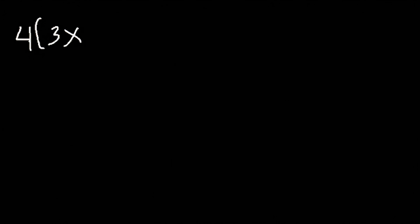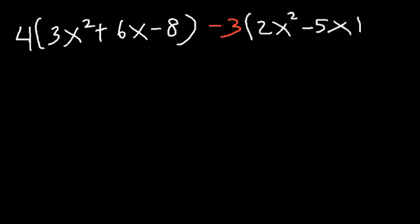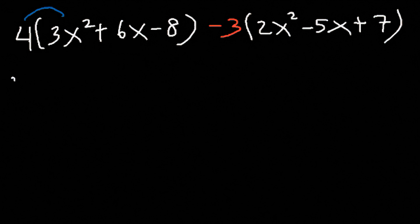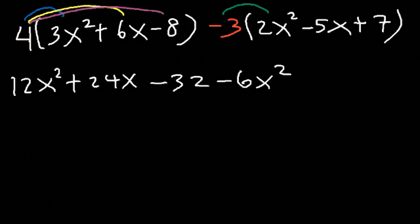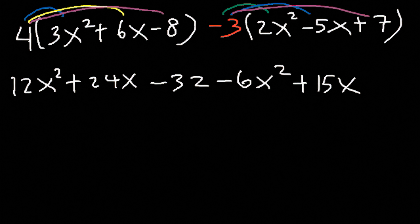Now what if we had numbers in front? The first thing we should do is distribute the 4 to the first three terms. 4 times 3x squared is 12x squared. 4 times 6x is 24x. And 4 times negative 8 is negative 32. Now let's distribute negative 3 to the three terms on the right. Negative 3 times 2x squared is negative 6x squared. Negative 3 times negative 5x is positive 15x. And negative 3 times 7 is negative 21.